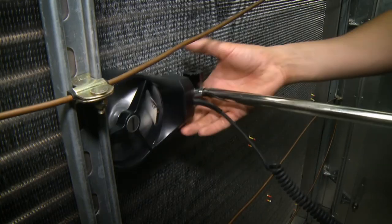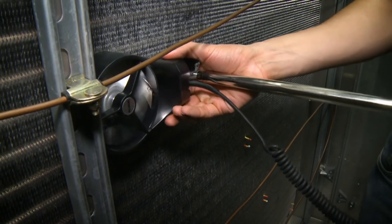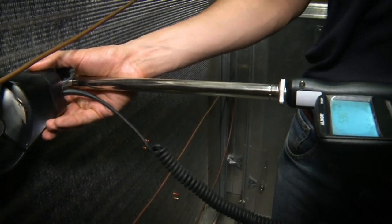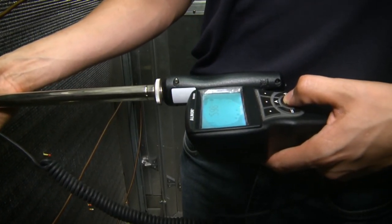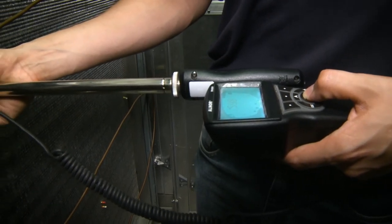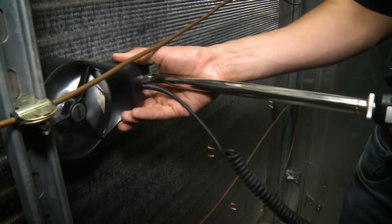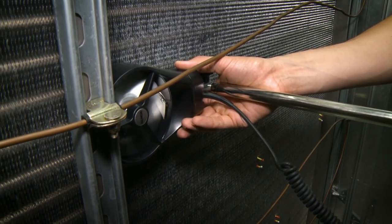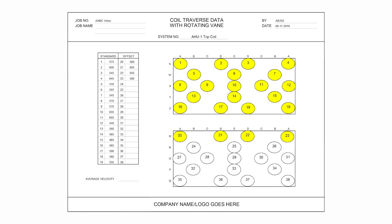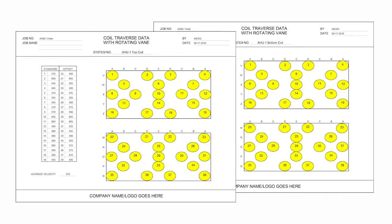Since the center position points for standard velocity reading location 6 and offset velocity reading location 25 are obstructed by the coil frame, the vane anemometer's head was positioned to the closest area possible for the velocity readings. For the remaining position points, continue to follow this procedure until velocity readings are complete for 38 position points on each coil.